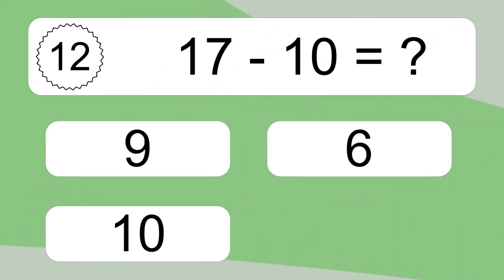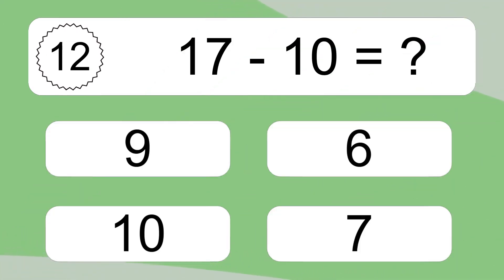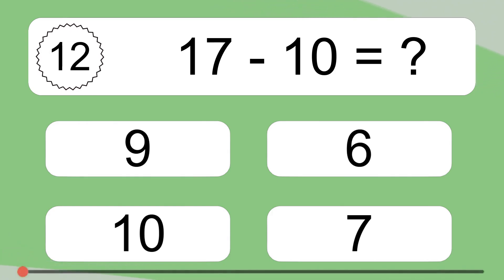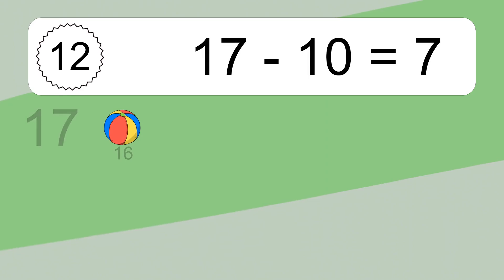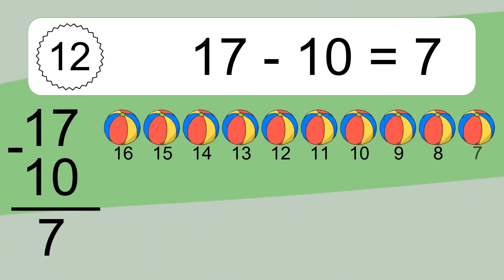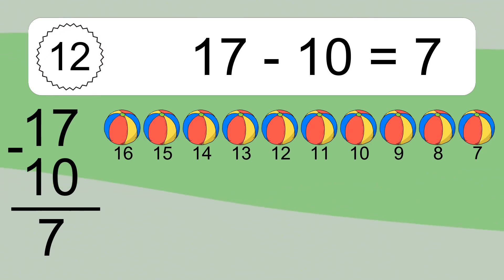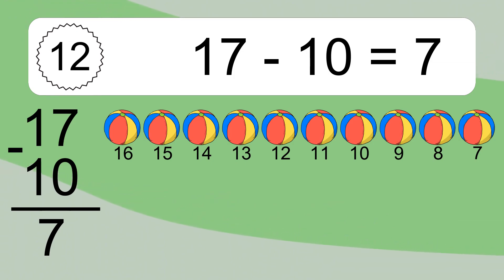17 minus 10 equals what? 17 minus 10 equals 7. Let's count it! 16, 15, 14, 13, 12, 11, 10, 9, 8, 7.